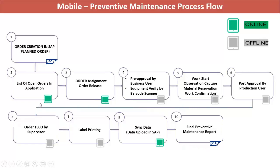Once the whole activity is done, the end user will come into the network area and sync. Block ten: whatever activity was performed offline will upload to the system, and the order is removed from the list. Now all the data which has been executed from the mobile is uploaded to SAP. For the audit purpose, we can provide a report — execution summary report — where you can see all executed maintenance details like administrative details, equipment details, at which location that specific equipment was installed.